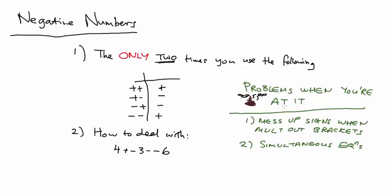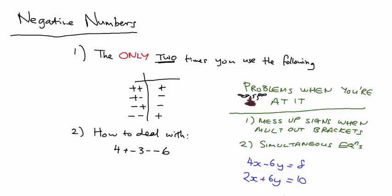A really common place where not knowing your negative numbers perfectly shows up is in simultaneous equations. For example, when you get to this sort of section, you might find that bit keeps screwing you up - sometimes you minus it and you think it's right, but the answer is always wrong. Guess what? You don't understand negative numbers somewhere.